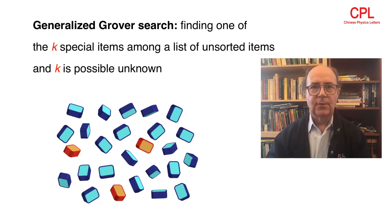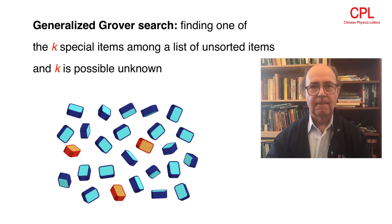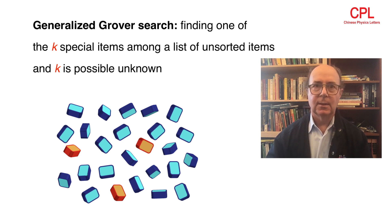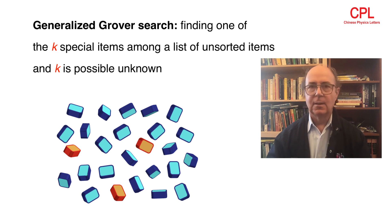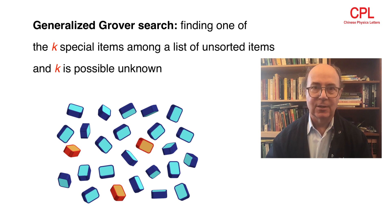The fun really starts when we consider a more general form of the Grover problem in which the list has k special items out of n, and you don't know which items they are, and you also don't know what k is.